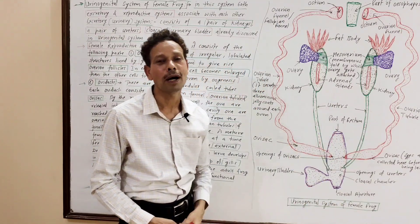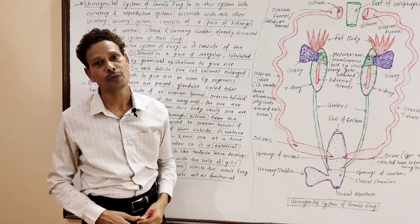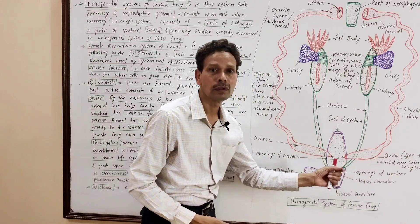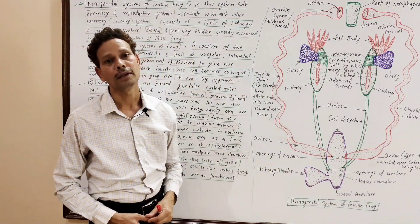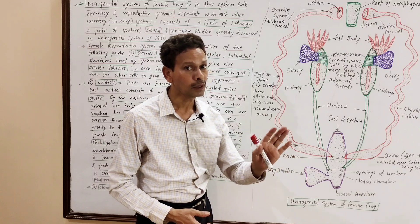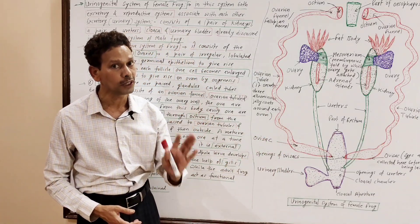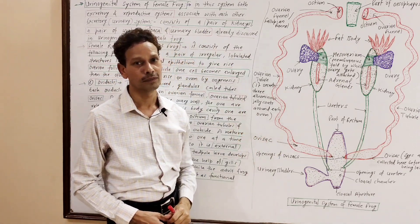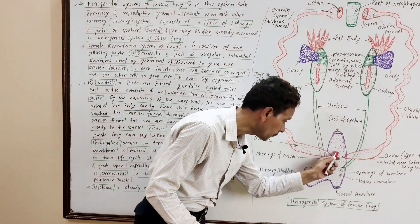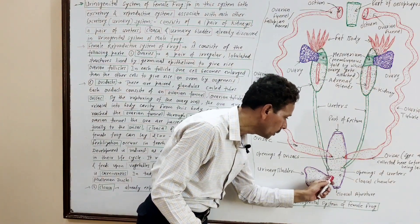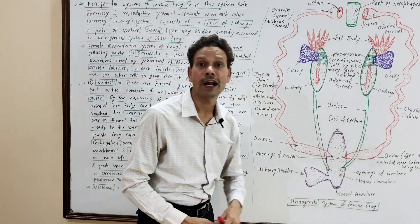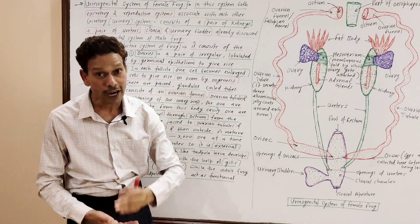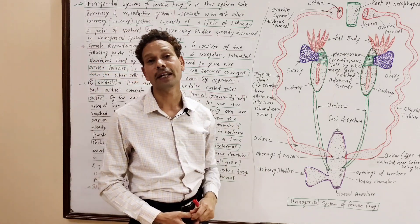Finally, the mature ova are passed into freshwater. A mature female frog gives rise to about 2,500 to 3,000 eggs at a time. These mature ova are passed from the common chamber — the cloaca — into freshwater through the cloacal aperture. Fertilization therefore takes place in freshwater, which is external fertilization.